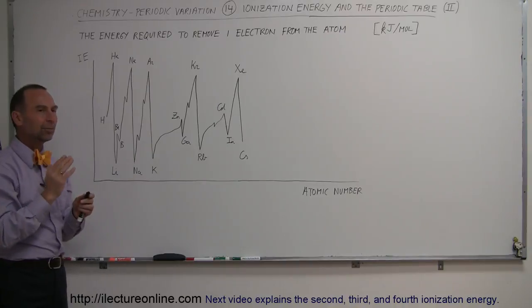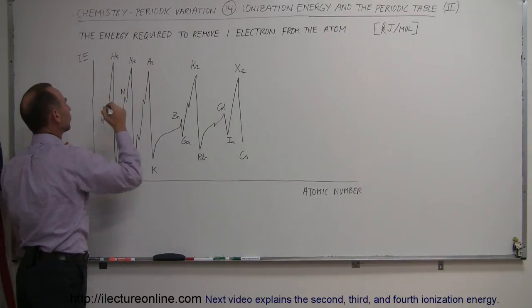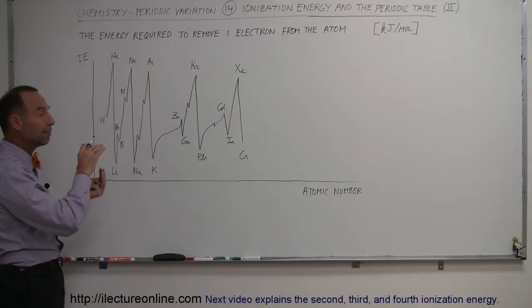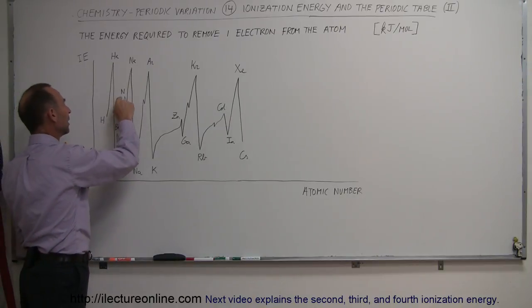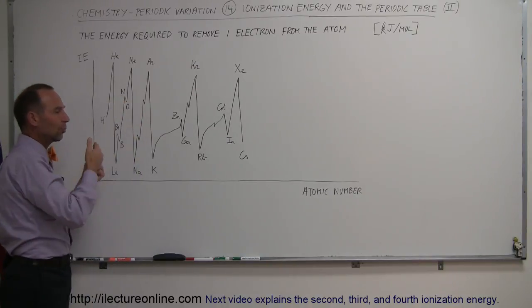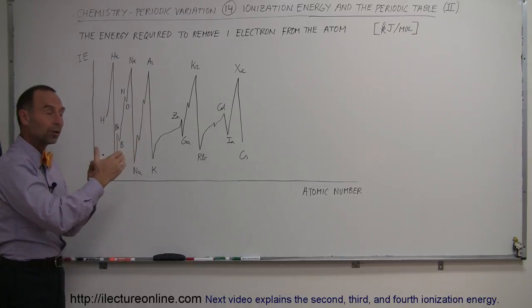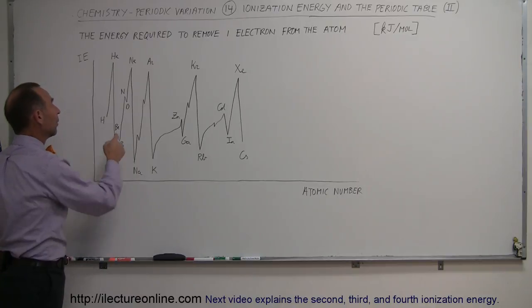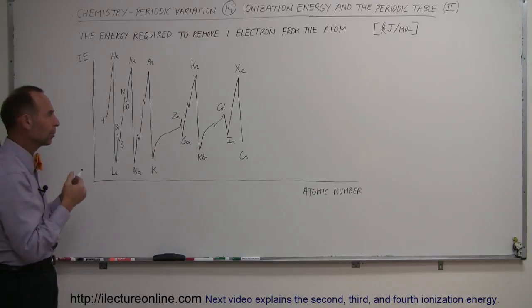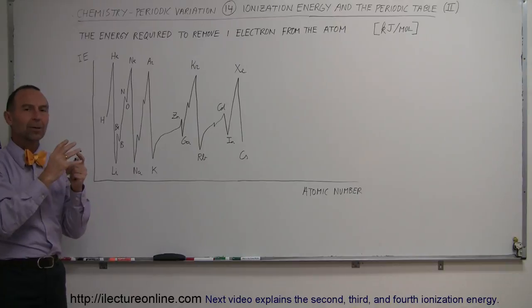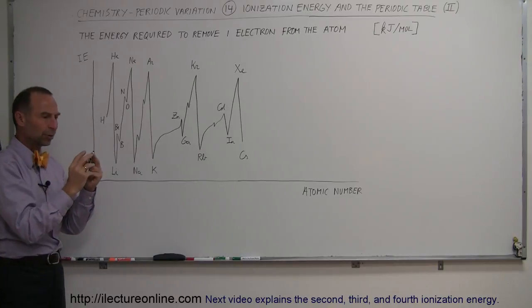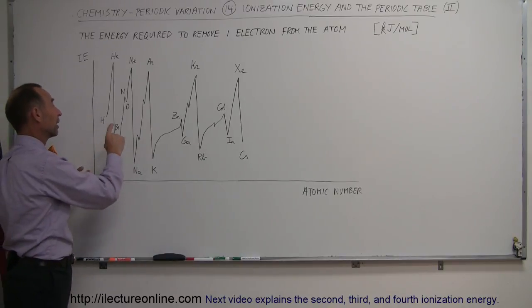We continue adding electrons until we reach nitrogen, where all three P-orbitals each have one electron. Then for oxygen, fluorine, and neon, we fill up the P-orbitals one by one. But when we go from nitrogen to oxygen, the ionization energy drops. The reason is that nitrogen has one electron in each of the three P-orbital spots. When we put a fourth electron in for oxygen, it now shares a position with an existing electron, making it a less stable and more easily removed situation — it's easier to remove an electron from a doubly-occupied P-orbital than from a singly-occupied one.